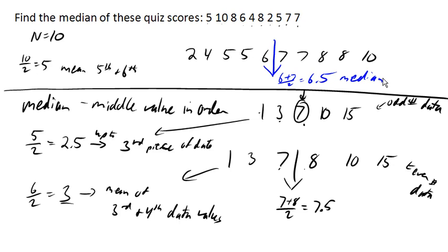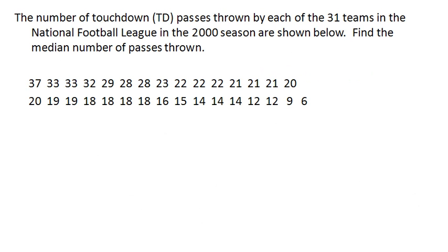So let's look at another example. So here is a set of touchdown passes. And this time they've been arranged in order for us, which is awfully nice. And so notice there are 31 pieces of data. If I divide 31 by 2, I get 15.5, which is a decimal value. And so I go up to 16th data value. Because we have an odd number of data, we know that the median is gonna be a single value. So now I can just find the 16th piece of data, because it's already listed in order.